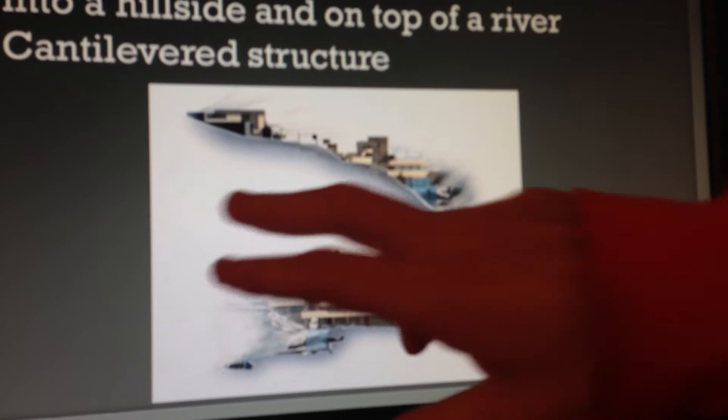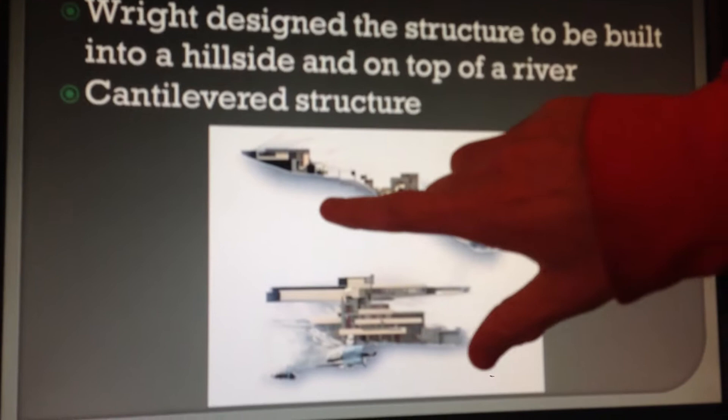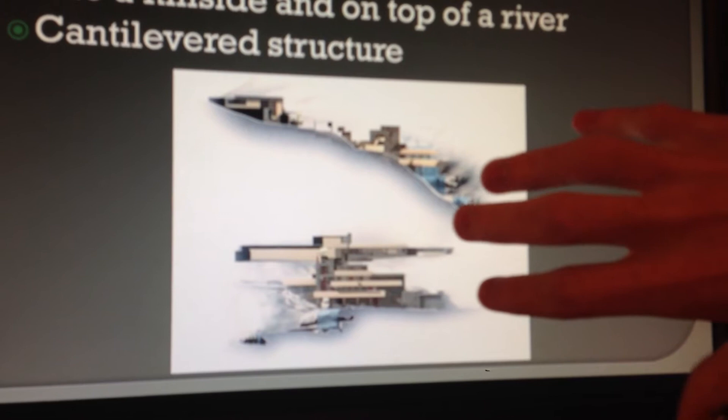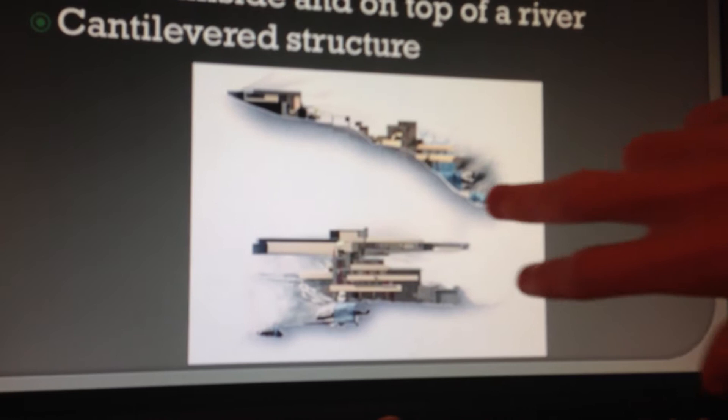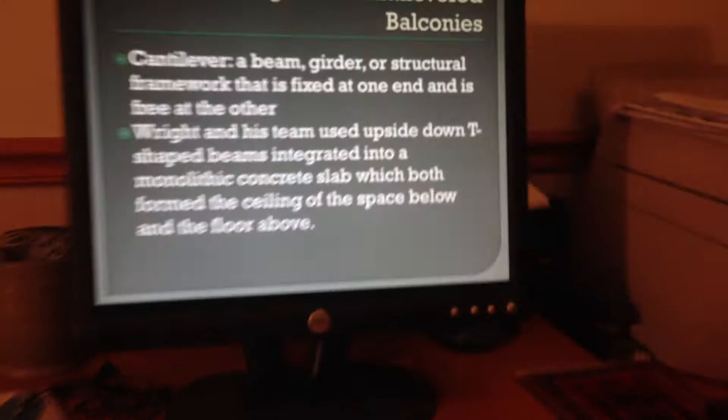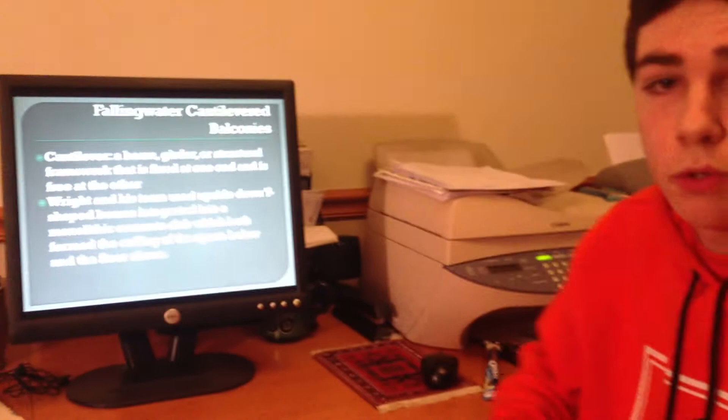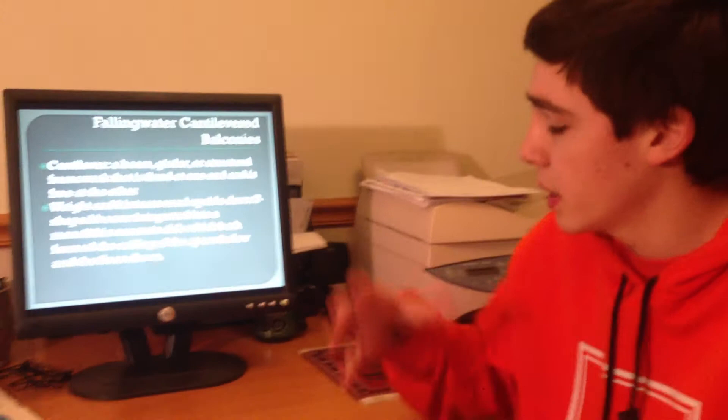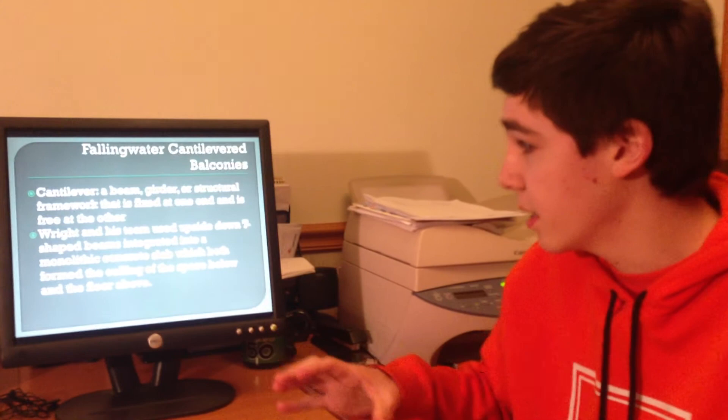For those of you who do not know what a cantilever is: it's simply a beam that holds up a structure on one side, and on the other side it does not have anything holding it — which just makes it look like it's floating in midair. In the case of Falling Water, Wright and his team used upside-down T-shaped beams and integrated a concrete slab around that, which formed the ceiling of the space below and also the floor above.